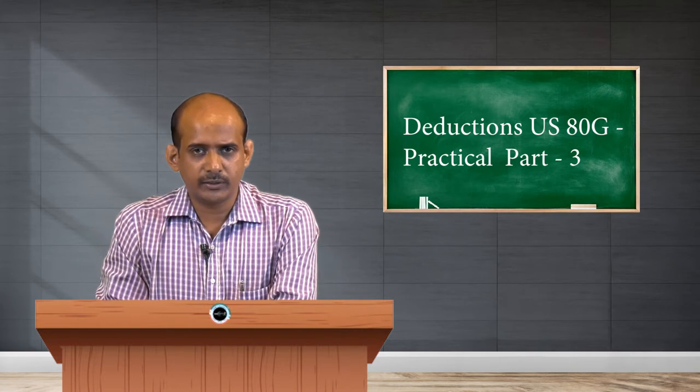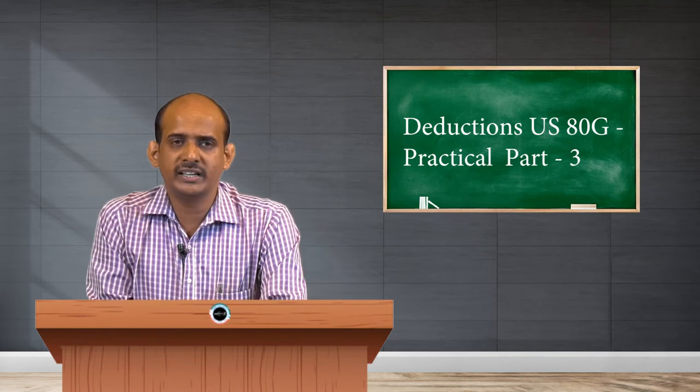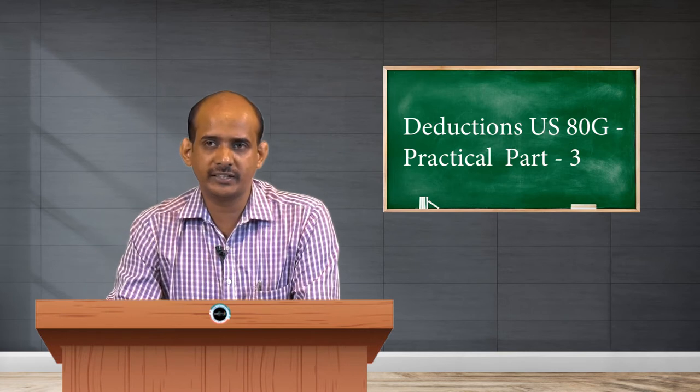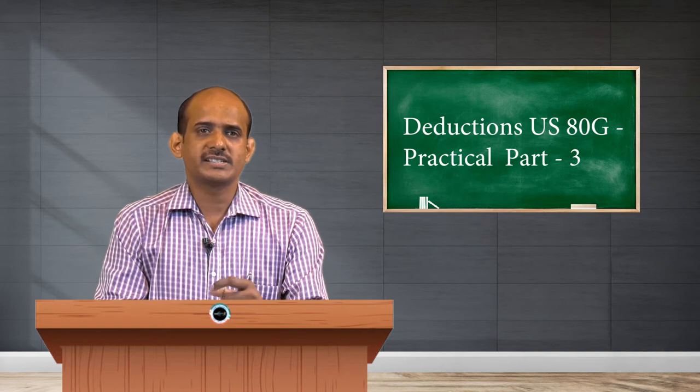Now we have to find out the adjusted total income. Adjusted total income is calculated by applying the following formula: gross total income less long-term capital gain, less short-term capital gain at 15 percent, less deductions from 80C to 80U except 80G. So from the gross total income, we deduct the long-term capital gain if any, then short-term capital gain at 15 percent if provided, then any deductions claimed so far from 80C to 80U except 80G.